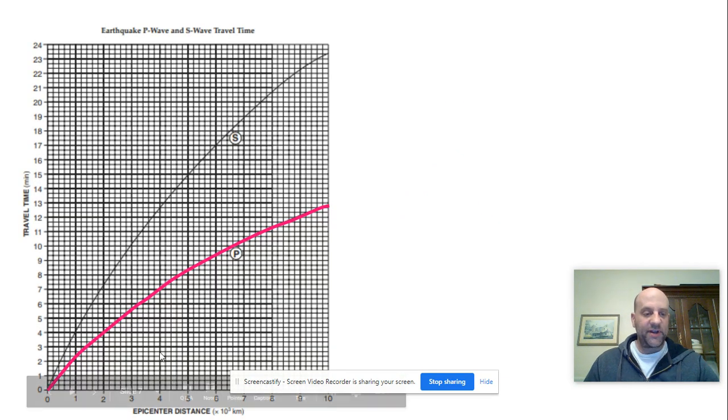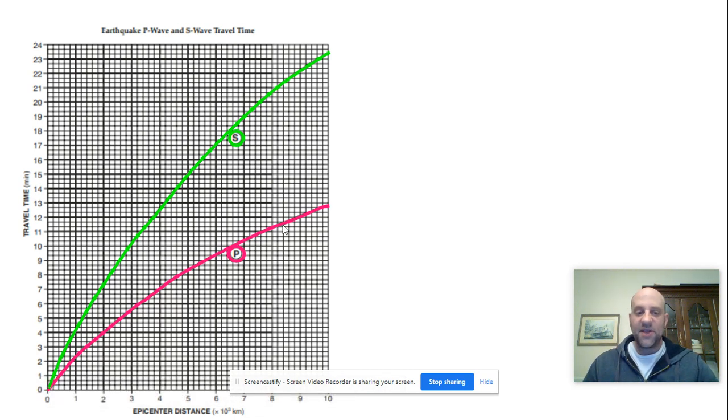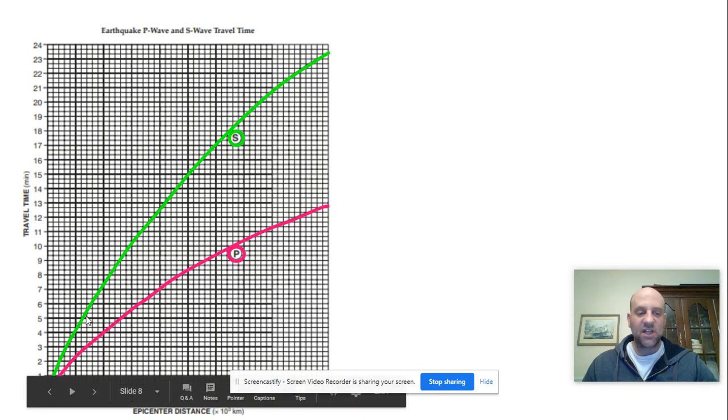On your chart you're going to see that there are two lines: a line for the P-wave and a line for the S-wave. The reason why there are two different lines is because these waves have different properties. The P-wave travels faster and can go through any type of material—solid, liquid, or gas—and the S-wave travels slower and can travel through solids only.